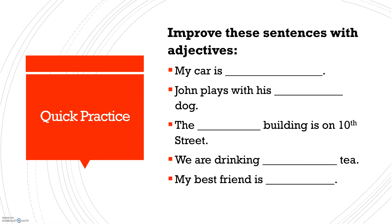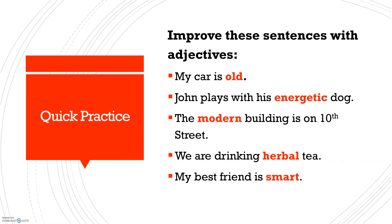Like always, we have a quick practice. You're going to improve these sentences with adjectives — you can put any of your ideas in there. I'll give you five seconds to pause the video, come up with your ideas, and then I'll give you some of mine. Here are my examples: 'My car is old.' 'John plays with his energetic dog' — energetic means with a lot of energy. 'The modern building is on 10th Street' — modern means something of a new style. 'We are drinking herbal tea.' And 'My best friend is smart.' I hope you have some interesting sentences — feel free to add yours to the comments!